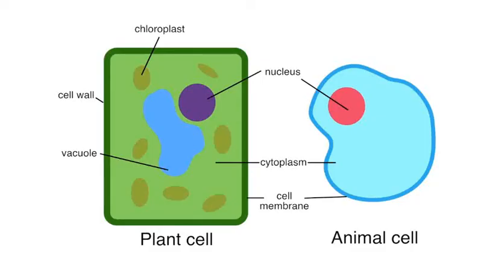Plant and animal cells share many basic structures, some of which can be viewed under a light microscope. For example, both types of cell have a nucleus, cytoplasm and a cell membrane.